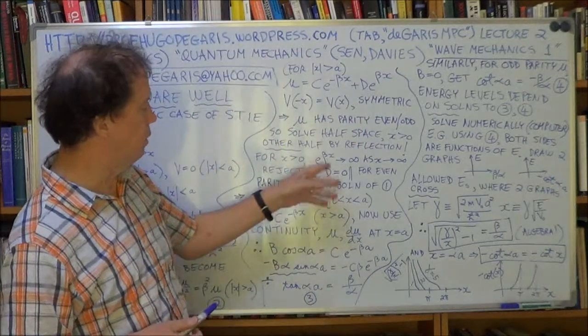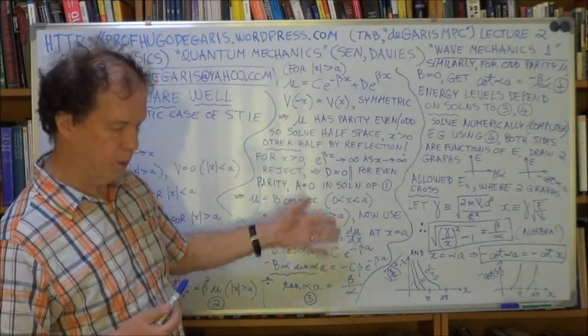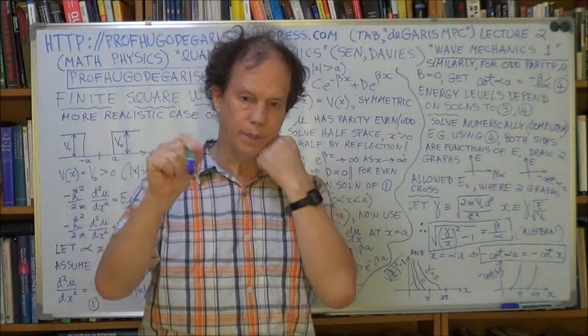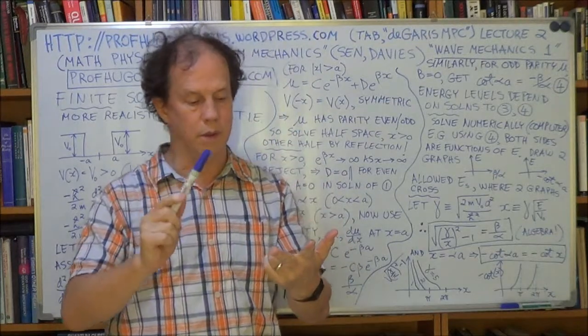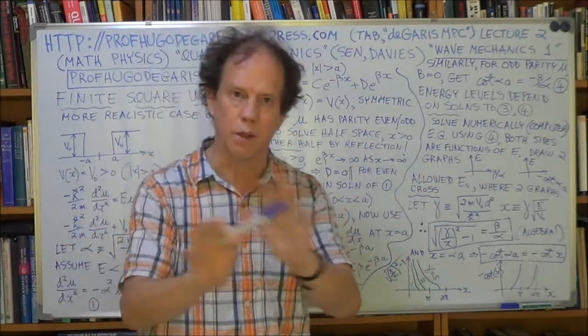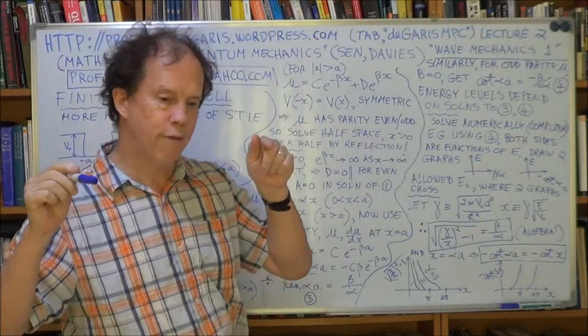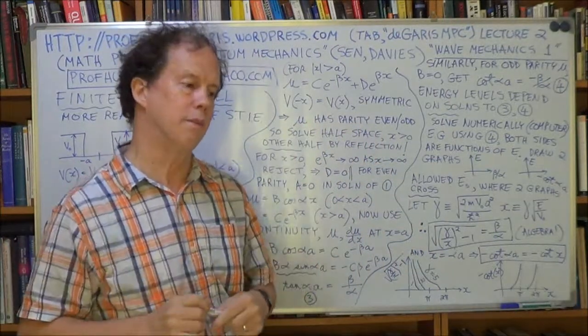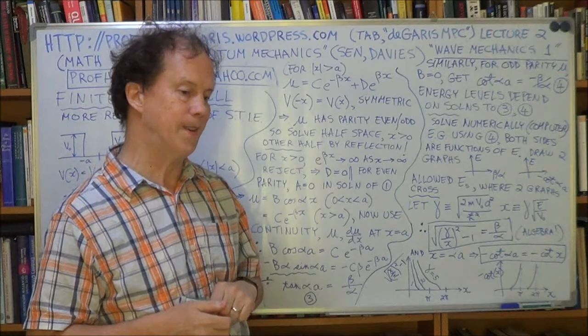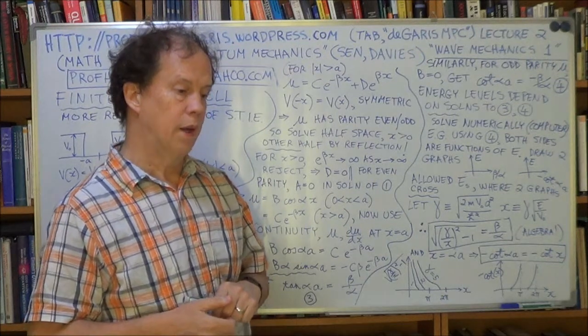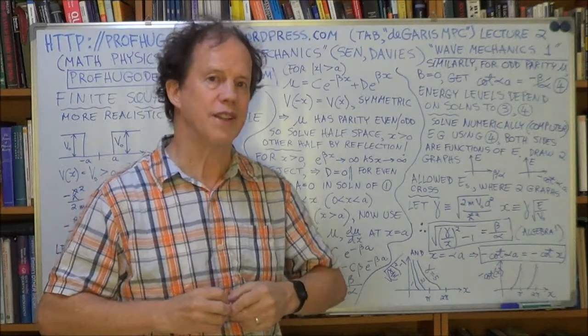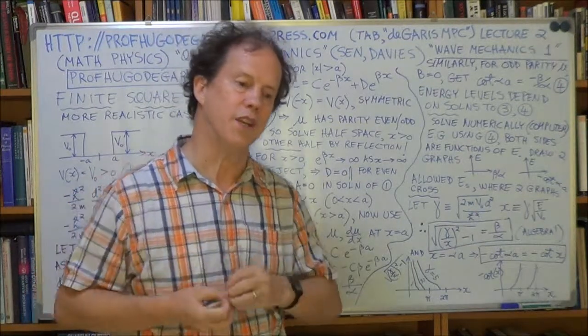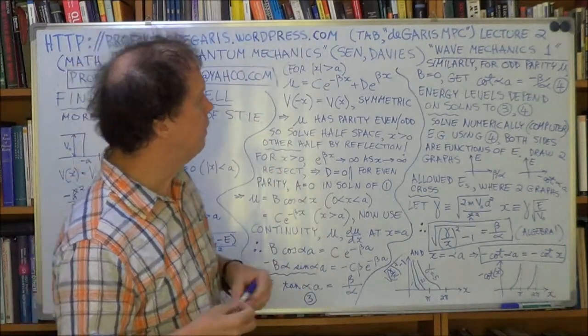Equation 4 and equation 3. Now these constraints put restrictions on the value of the energy E that you can have. I've done this kind of thing before. These constraints on your wave function—single valued, normalizable, blah blah blah—all those conditions they force, to a large extent, the discretization, the quantization of the energy.